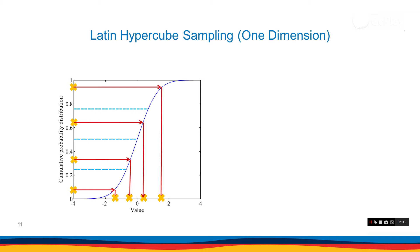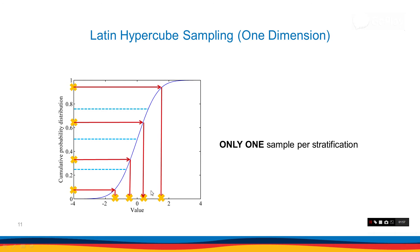I am going to emphasize it: just one sample per stratification. We cannot have two samples — just one sample. And again, the sampling inside each stratification is a random thing. Each selection is random, but only one sample per stratification.